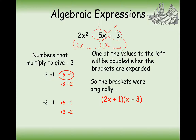So in this case our answer is 2x plus 1 and x minus 3. This doesn't follow the nice rule where the two numbers add to make the middle one. Notice that the 2x and the minus 3, when we expand, gives us minus 6x, and the x gives us plus x, for a total of minus 5x. So it's a bit more tricky to factorise quadratic expressions where there's a number in front of the x squared.